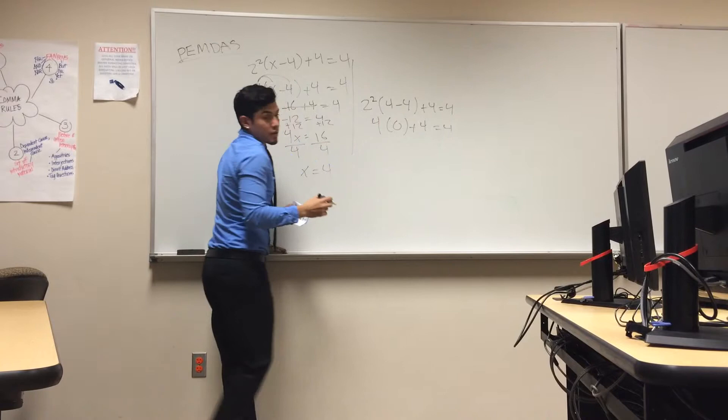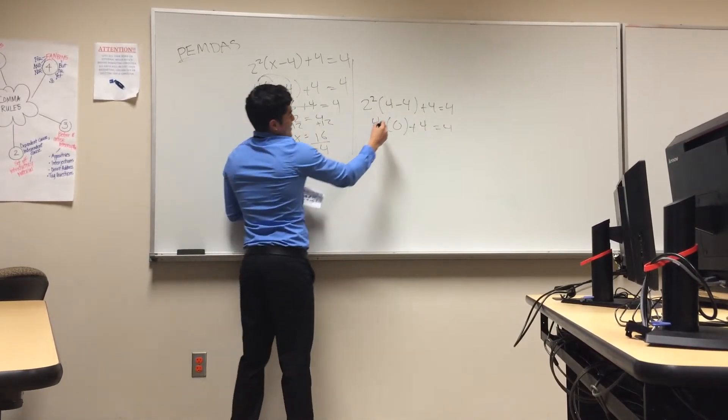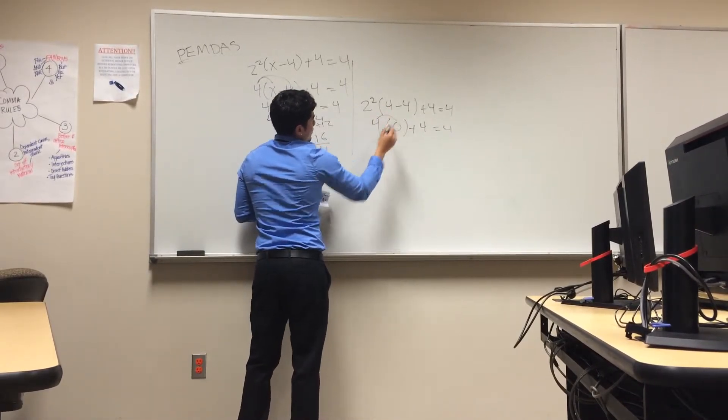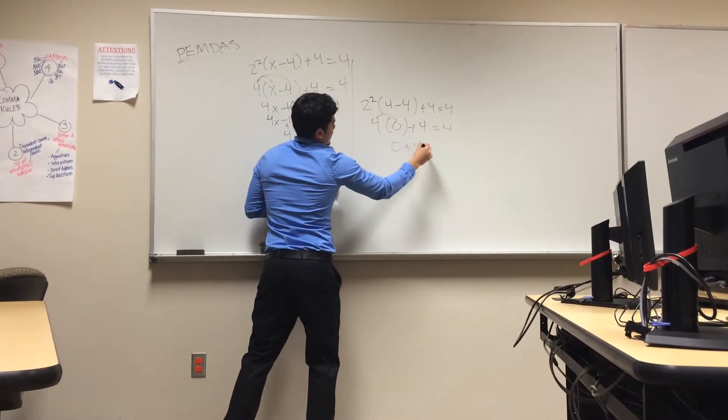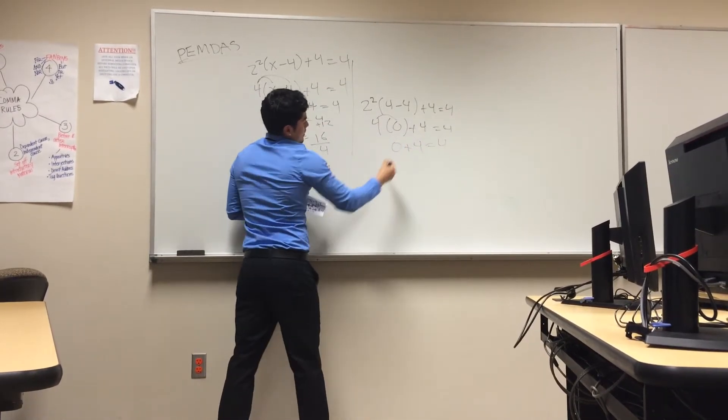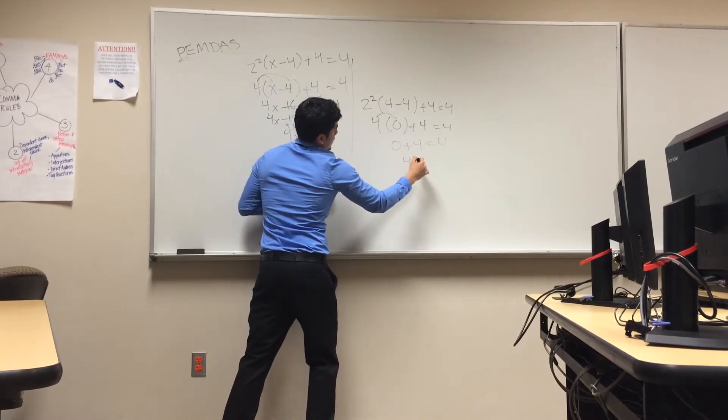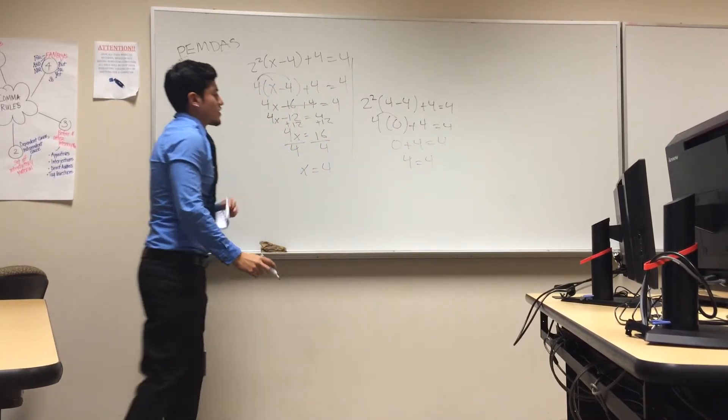So, now you distribute the 4 inside the parentheses. 4 times 0 would equal 0. Plus 4 equals 4. You combine like terms. 4 equals 4. So, that's how you know you got it right.